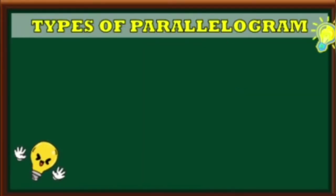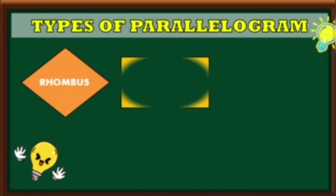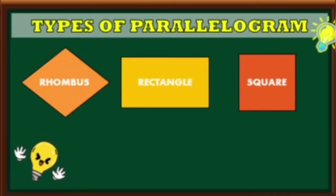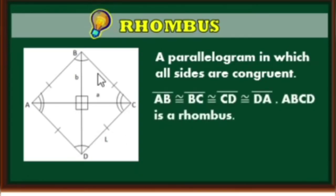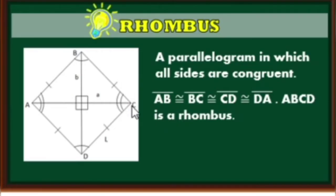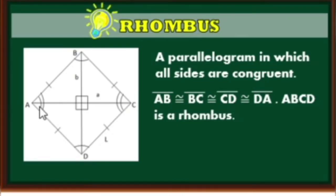Let us now move on to the types of parallelogram. We have rhombus, rectangle, and square. Let us first discuss rhombus. A rhombus is a parallelogram in which all sides are congruent. We have here parallelogram ABCD: line segment AB is congruent to BC, congruent to CD, and congruent to DA. Therefore, parallelogram ABCD is a rhombus.